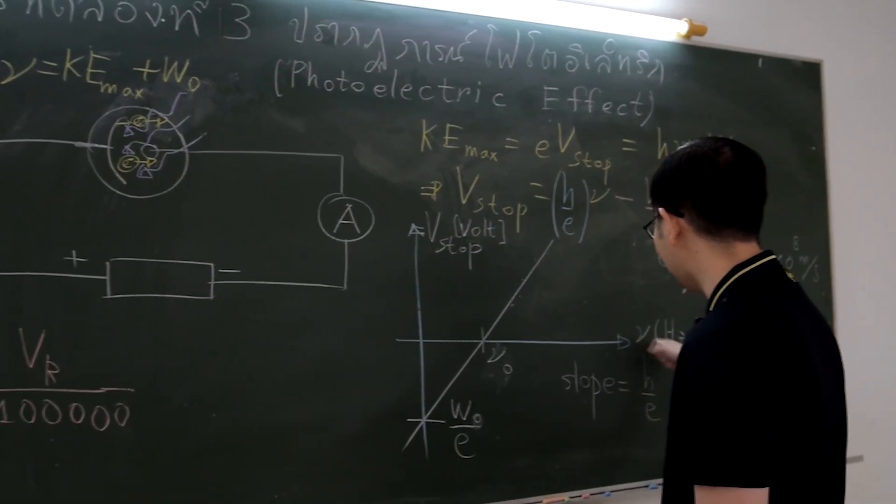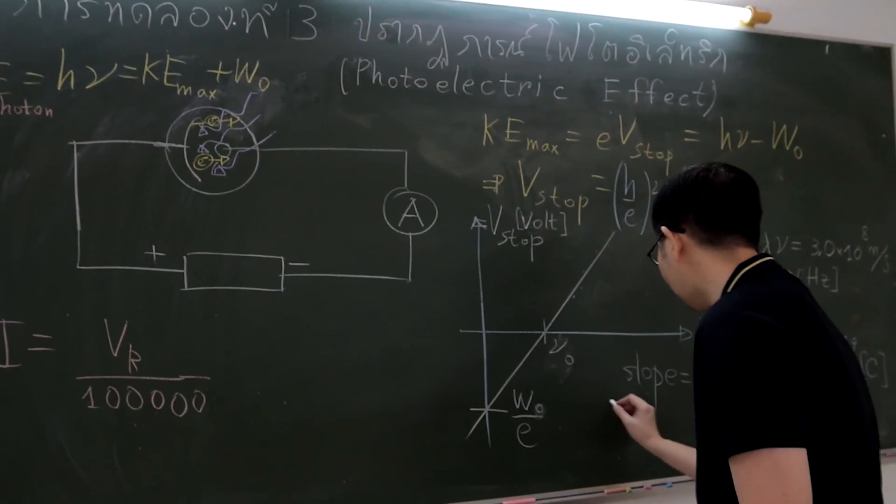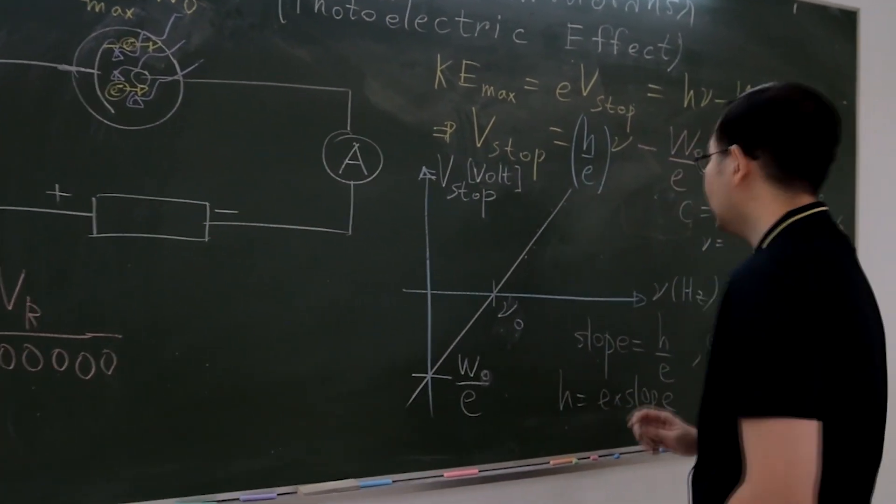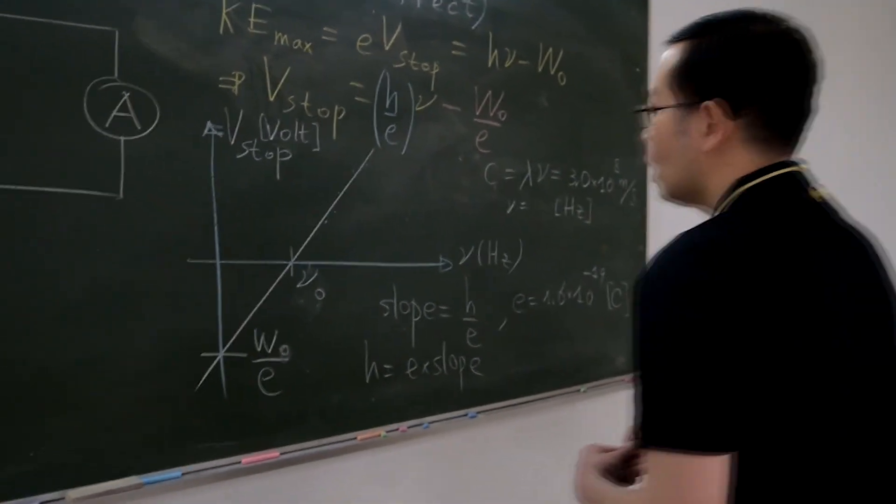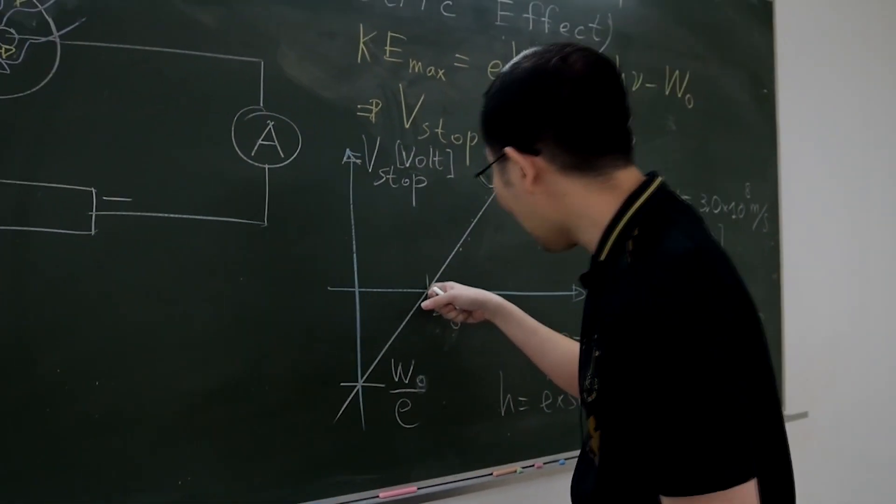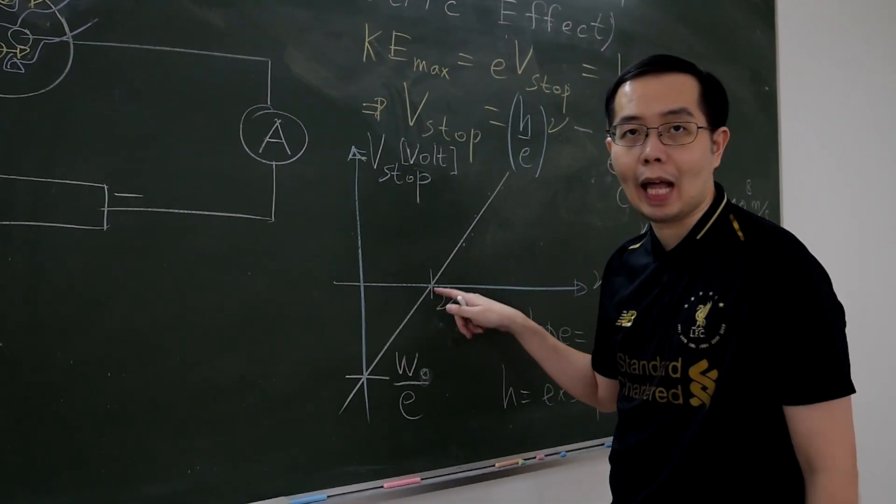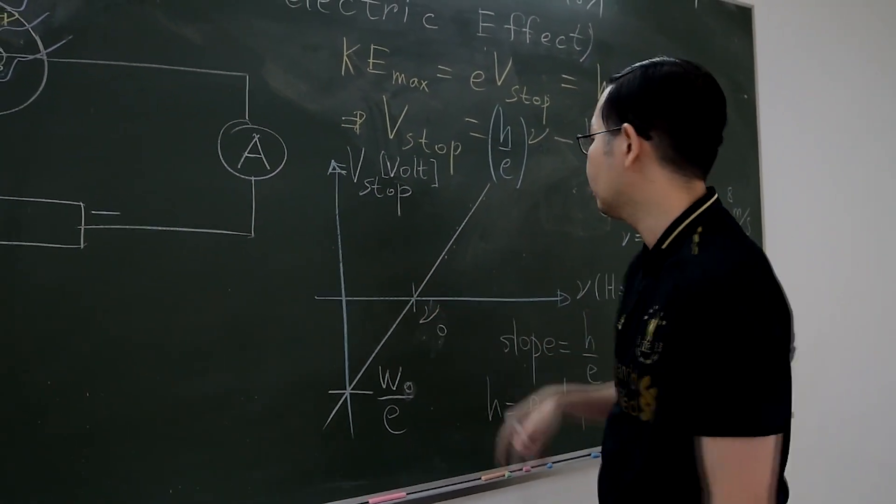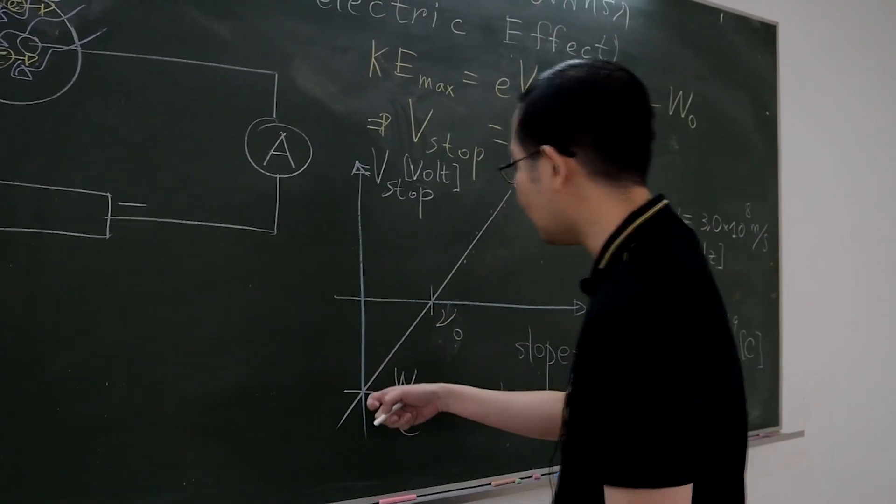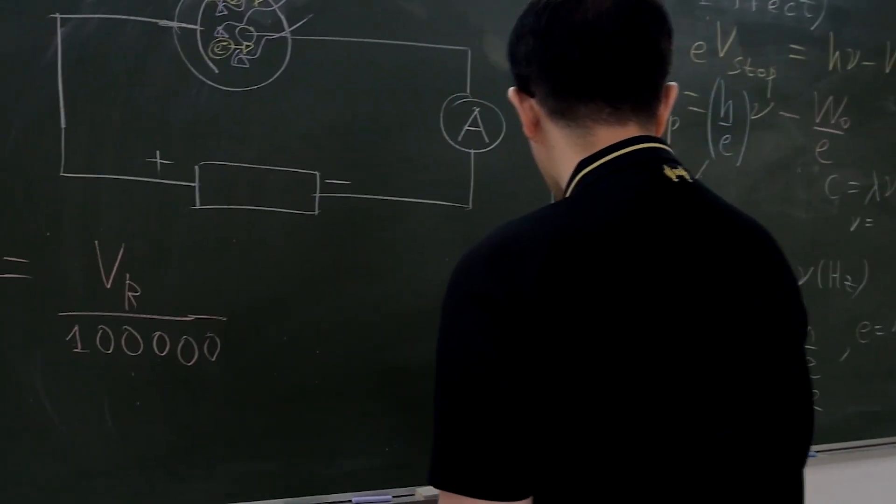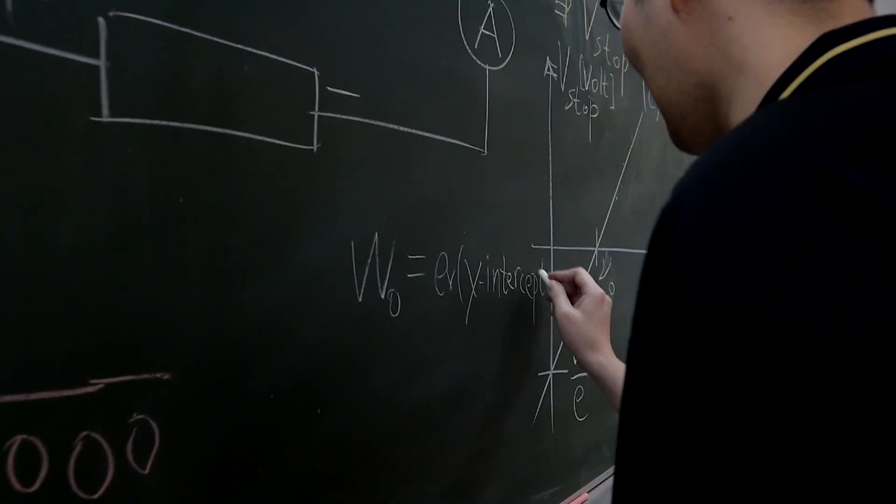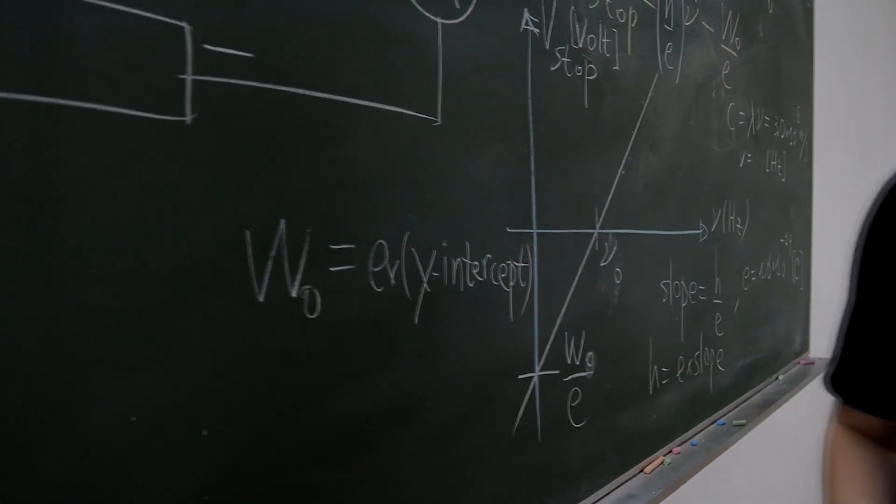So students can calculate Planck's constant by multiplication of the slope of graph line and the electric charge. Then students must find the threshold frequency. This threshold frequency is the starting frequency that causes the emittance of photoelectrons. The threshold frequency can be found from the x-intercept of the graph line. Finally, the y-intercept is the work function divided by the electric charge. Then the work function can be calculated by the electric charge times y-intercept.